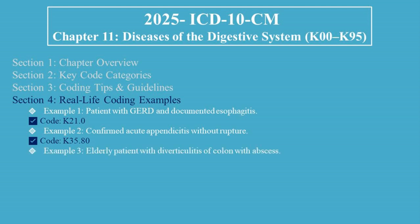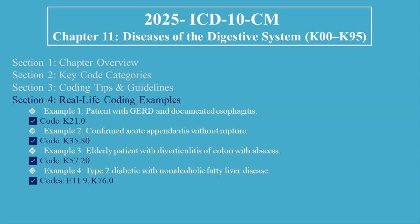Example 3 — Elderly patient with diverticulitis of colon with abscess: Code K57.20. Example 4 — Type 2 diabetic with non-alcoholic fatty liver disease: Codes E11.9 and K76.0. Example 5 — Post-op bleeding following cholecystectomy: Code K91.840.